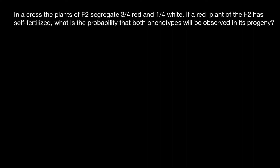Hello and welcome to Nikolai's Genetics Lessons. Today's problem I got from one of my subscribers. In a cross, the plants of F2 generation segregate three quarters red and one quarter white. If a red plant of the F2 generation has self-fertilized, what is the probability that both phenotypes will be observed in its progeny?